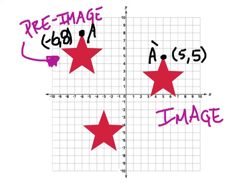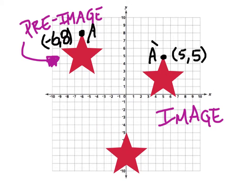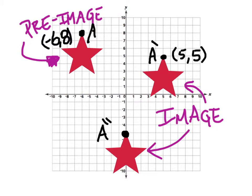I can also take this image and find an image of that image, placing it right here. This is still point A, but it's been moved not once but twice. Notice the notational difference: one prime means moved once, two primes means moved twice. This is an image that is also itself an image, and if we wanted, we could call it a pre-image of the double-prime point. The mark tells us it was already moved once.